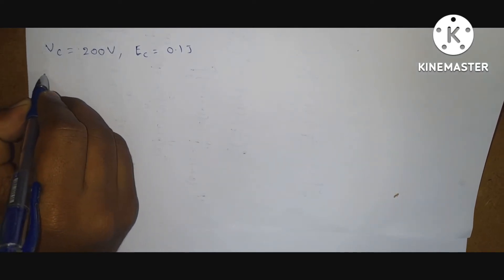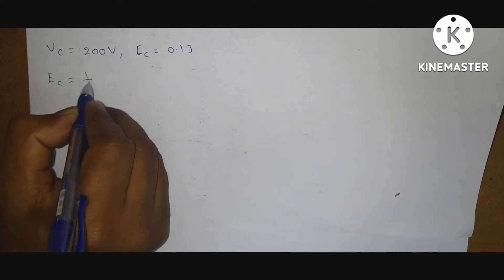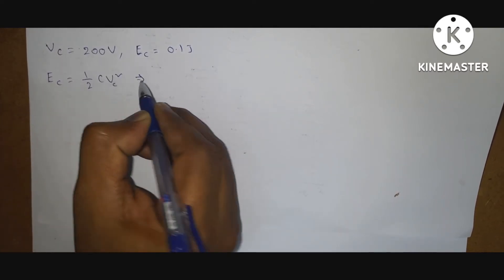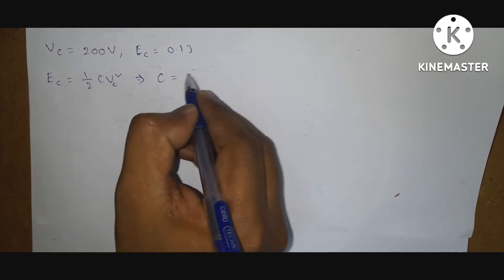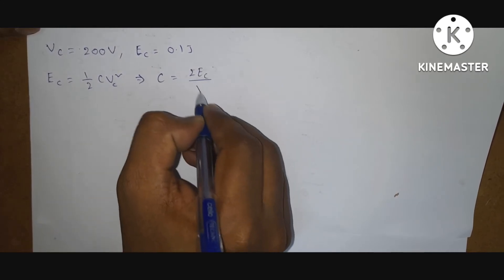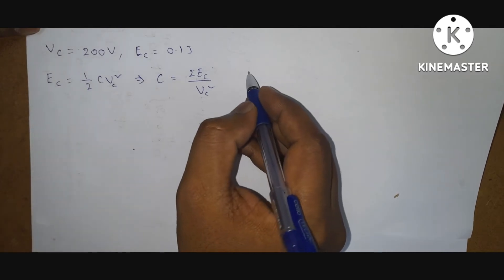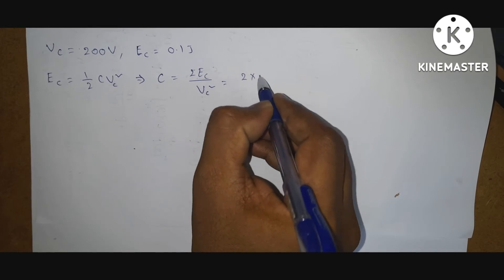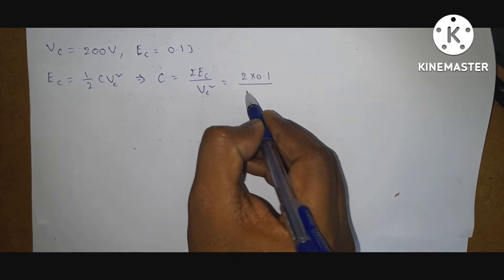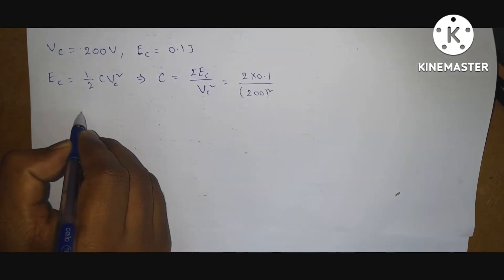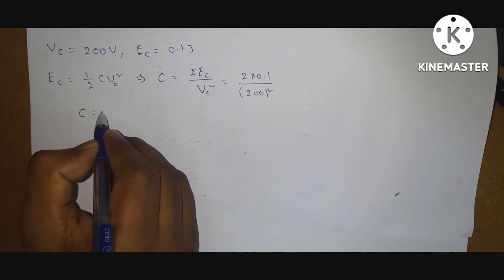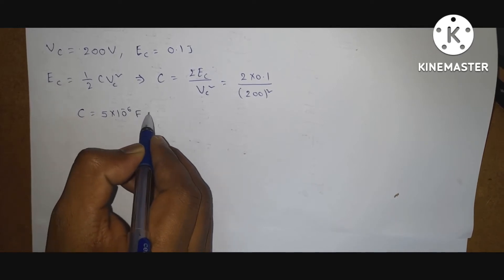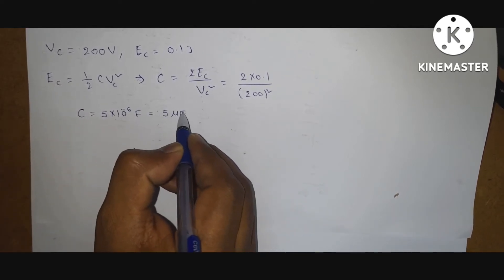So energy stored in the capacitor is: Ec is equal to half Cv squared, that is half C·Vc². From this, what is C? C is equal to 2·Ec by Vc². Substitute given values: 2 into 0.1 by 200 whole square. So if you solve that, capacitance value is 5 into 10 power minus 6 Farad, or 5 microfarad.